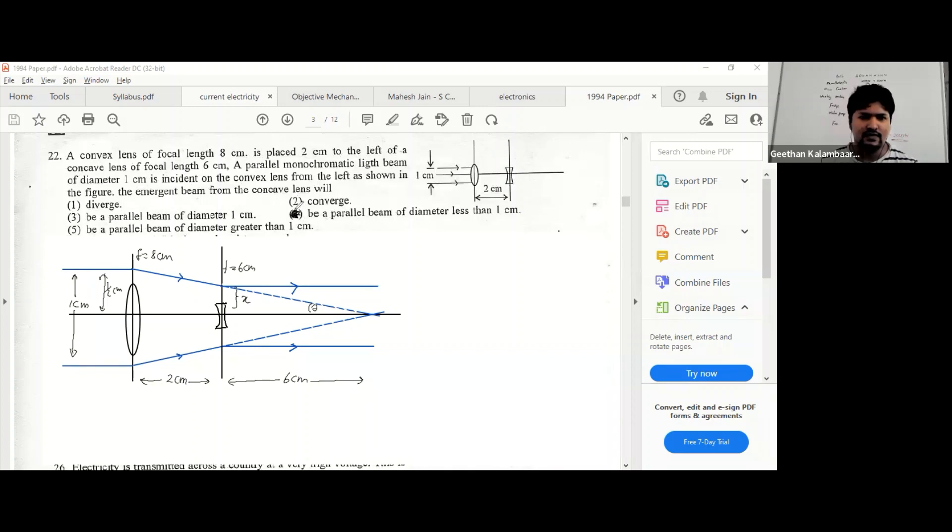So let's find x. You can write tan theta equals half divided by this whole length eight, equals to x divided by distance six. It gets simplified now, so x is equal to three by eight centimeters.